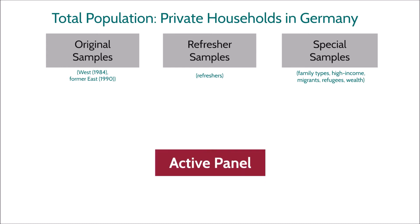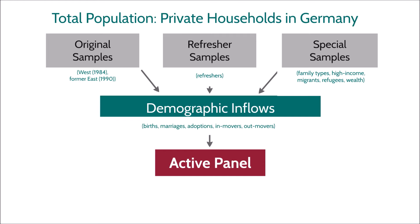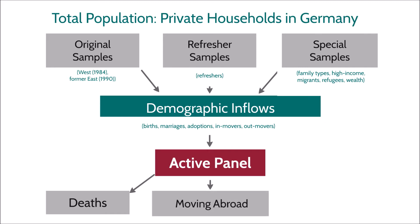What we refer to as the active panel is the set of respondents interviewed in a particular year. This group is influenced by demographic changes within the initially sampled households. Naturally, this means that respondents leave the sample. Moving abroad also means that respondents leave the sample, since the panel consists only of private households in Germany.